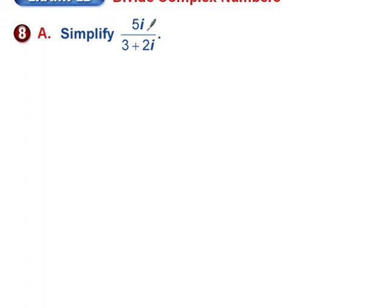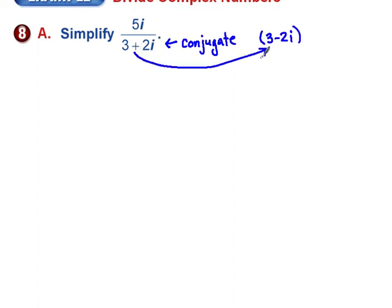In this division problem, I have 5i divided by the complex number 3 plus 2i. I need to get rid of the i in the divisor. To do that, I'll use the conjugate of 3 plus 2i, which is 3 minus 2i. I'm going to multiply the fraction by 1 — specifically a complicated version of 1 using the conjugate — so the value doesn't change.